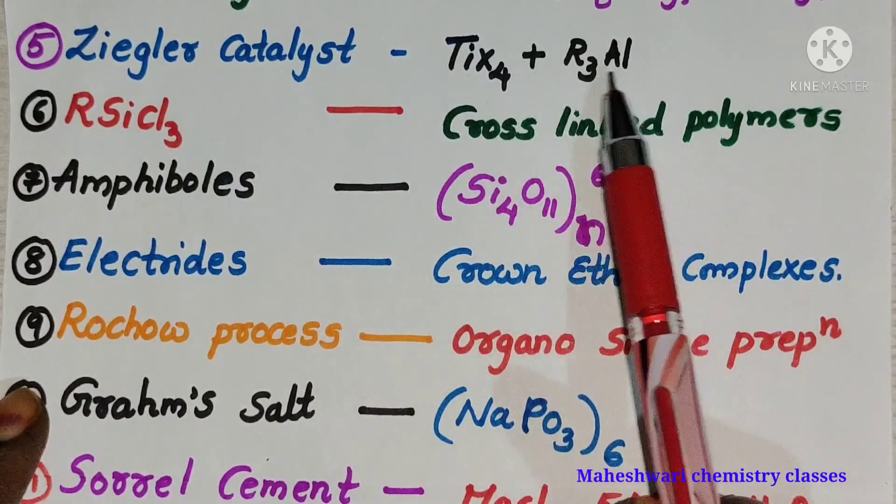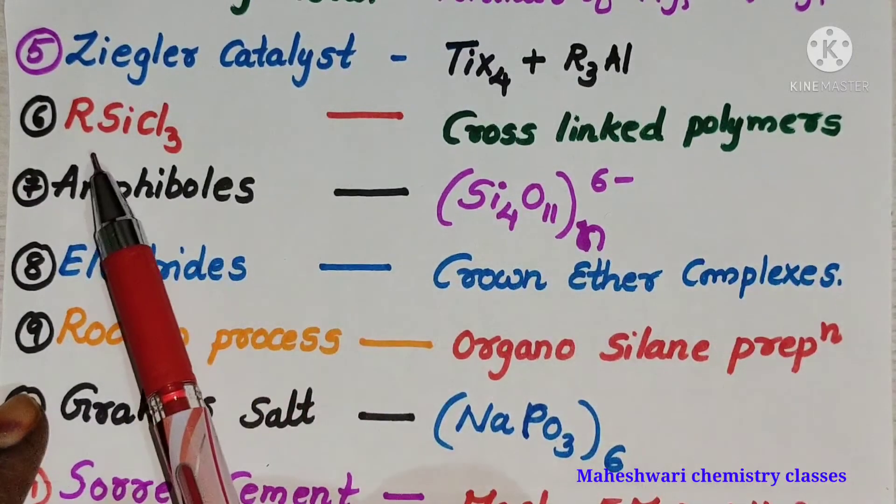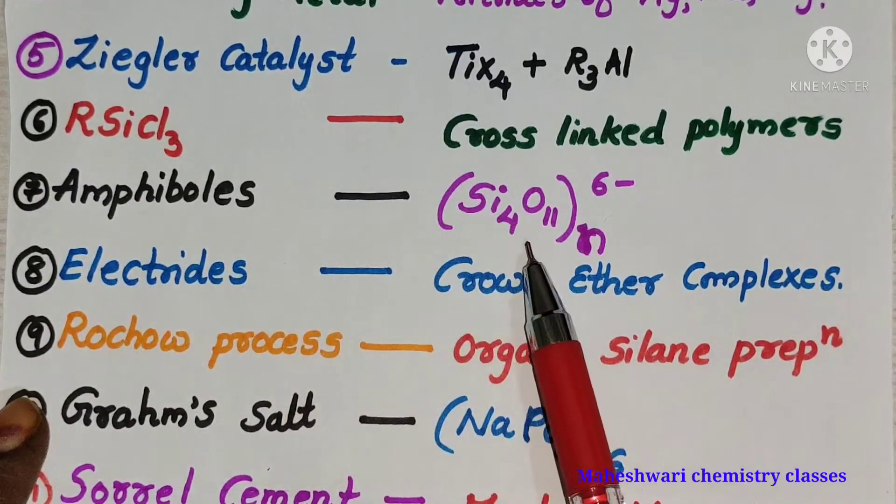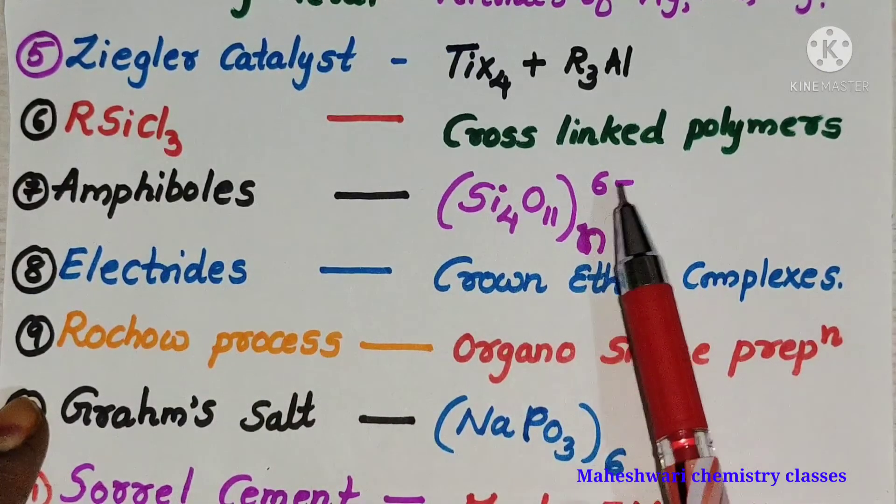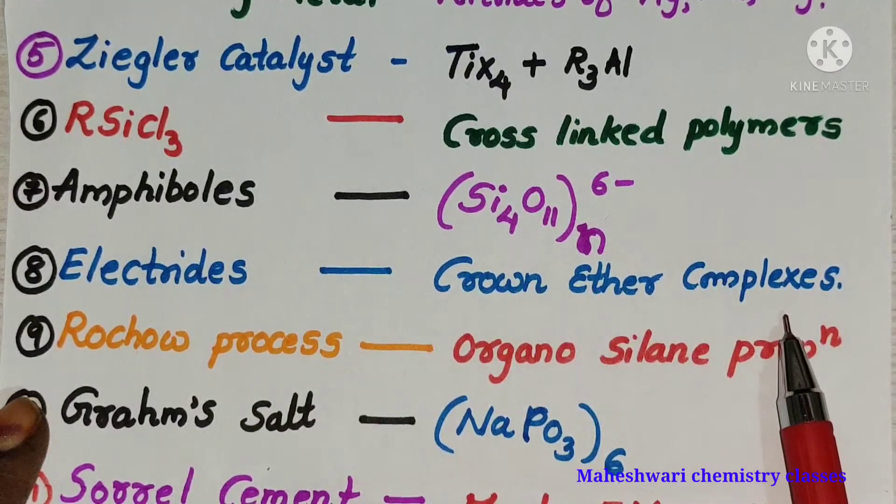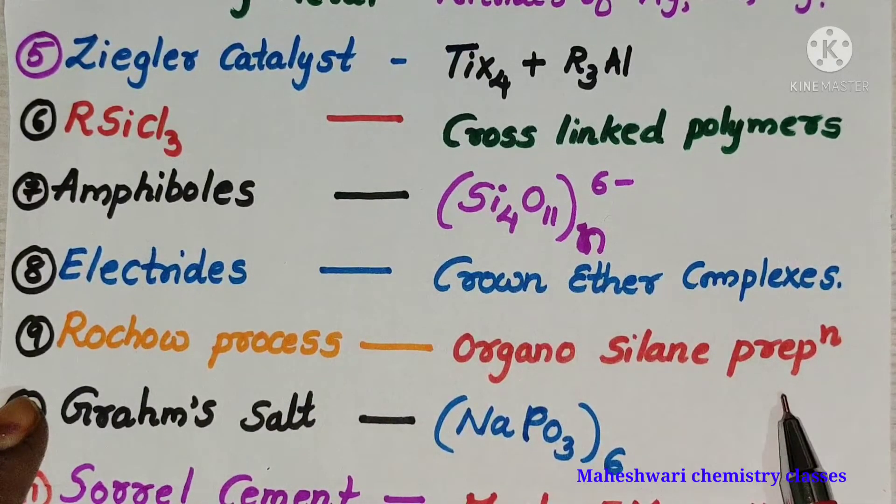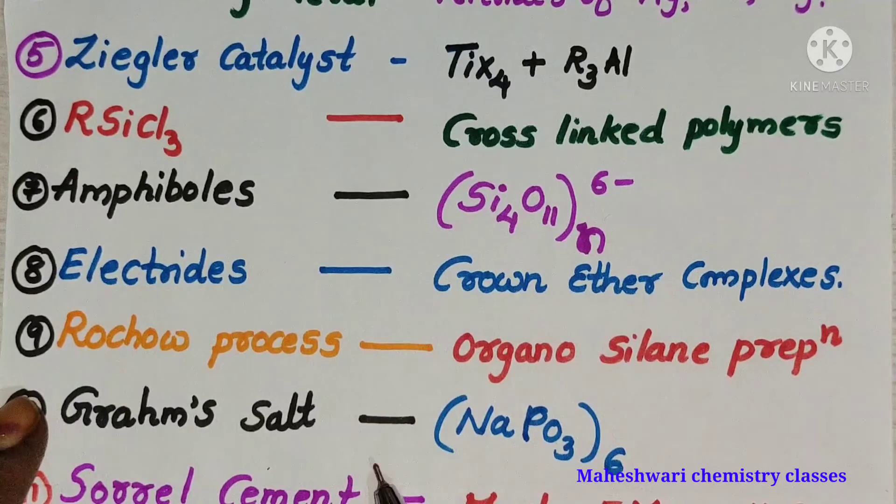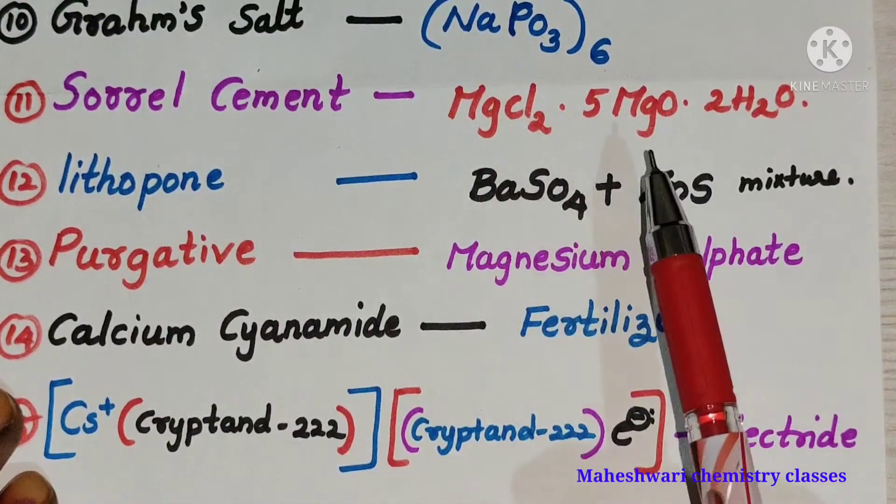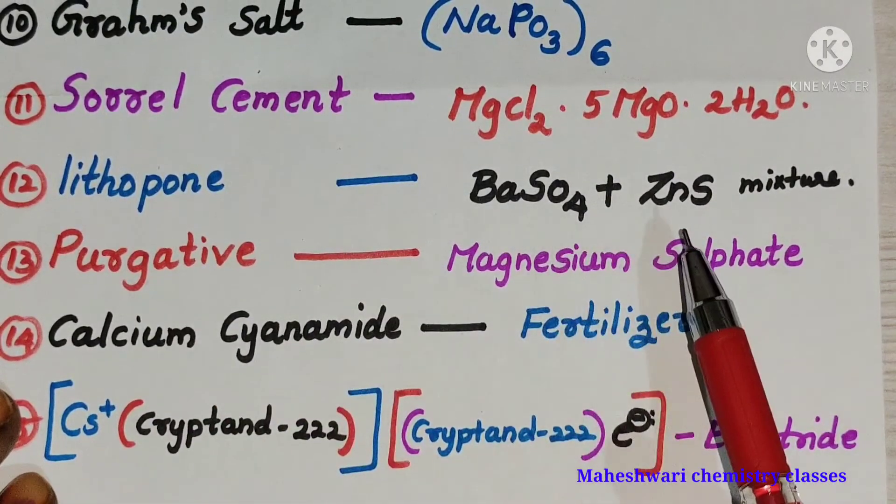Cross-linked polymers R-SiCl3, amphiboles Si4O11 taken to power 6 minus charge, electrolytes crown ethers complexes, Rochow process organosilane preparation, Graham salt sodium phosphate, Sorel cement magnesium chloride magnesium oxide water mixture.